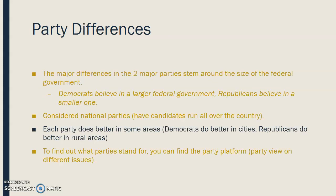The major differences between the two main parties stem around the size of the federal government. Democrats believe in a larger federal government, while Republicans believe in a smaller one. These are considered national parties, meaning they have candidates running all over the country for local, state, and federal positions. Each party does better in some areas — Democrats tend to do better in cities, while Republicans tend to do better in rural areas. If you want to find out what parties stand for, you can find their platforms, which are their party views on different issues, and see if they conform to what you believe.